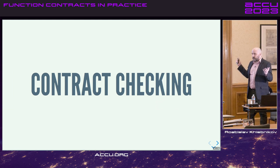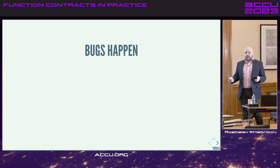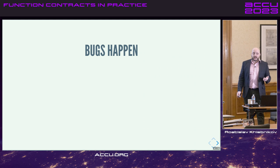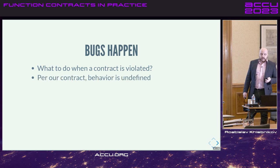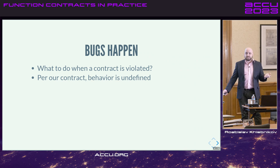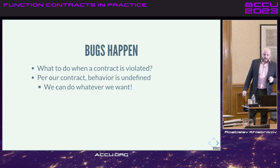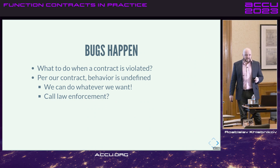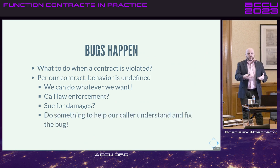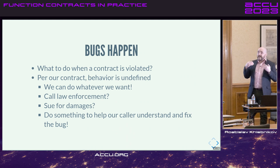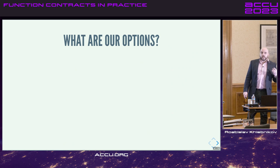We've defined our function contract with some preconditions. But people are fallible and bugs happen. So what do we do when the contract is violated? Per our contract, behavior is undefined — we can do whatever we want within the capabilities of our program. Should we call law enforcement? Sue for damages? Well, we're working with our clients towards better software, towards a common goal. We actually want to help them find the bug, understand the problem, and fix it.